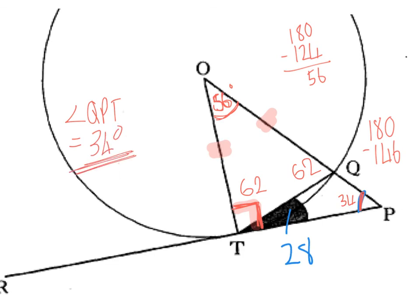I could have also gone and got the other side of the 62, which would have been 118. We could have then used 118 and the 28 to also get the 34 from there as well.